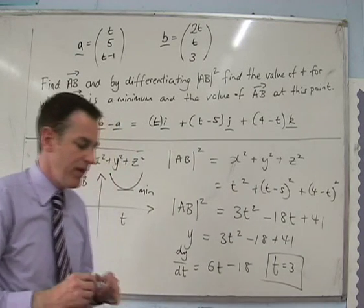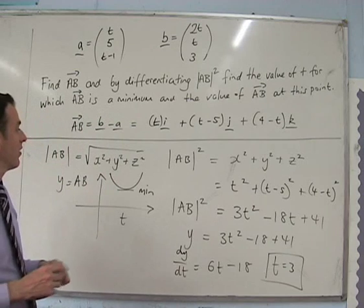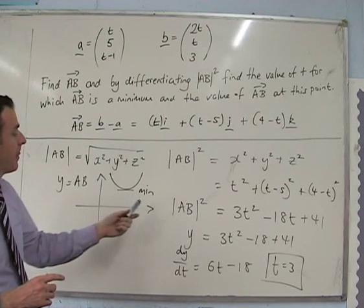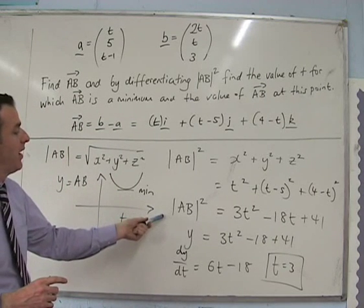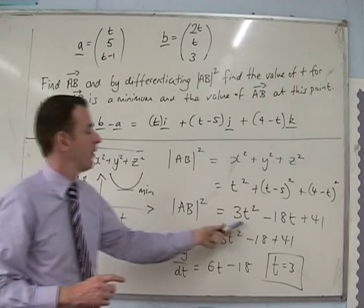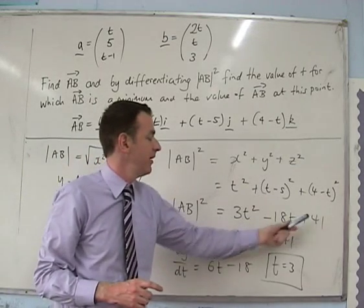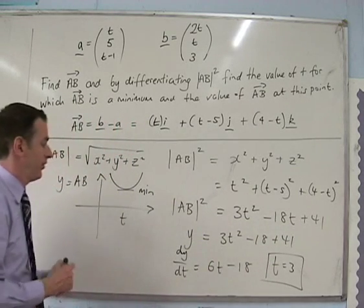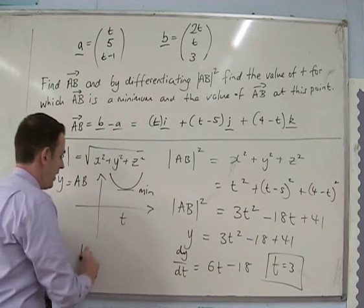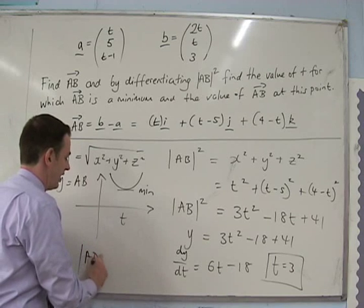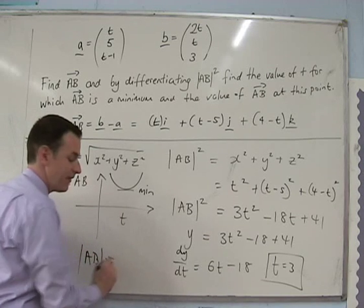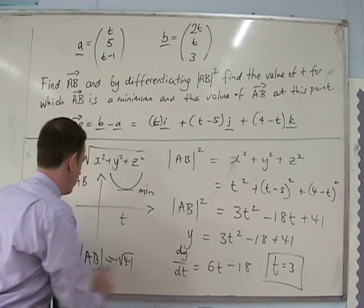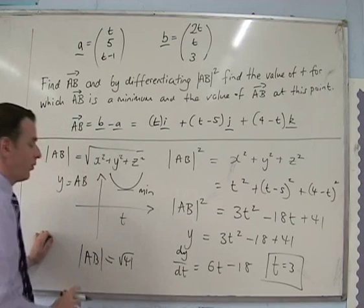Going back to AB squared equals 3t squared minus 18t plus 41, and substituting t equals 3, we end up with a minimum value of AB equal to the square root of 41.